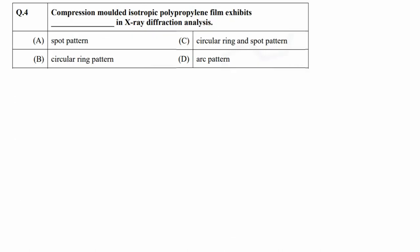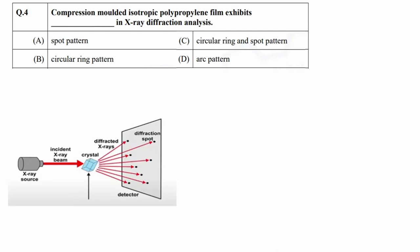In question 4, we need to identify what type of pattern will be obtained if a compression molded isotropic polypropylene film is analyzed under X-ray diffractometer. XRD is used to study crystallinity of a material. When X-rays are passed through a sample, X-rays are scattered by the crystalline part of the sample. Since in crystals, atoms are regularly arranged at equal distances, emitted X-rays are detected at the same spot due to high density of atoms in one place.